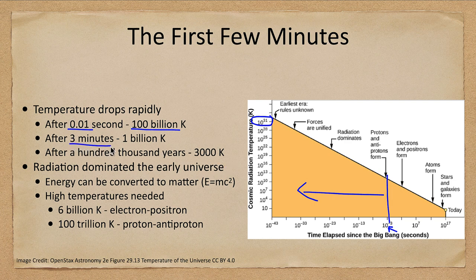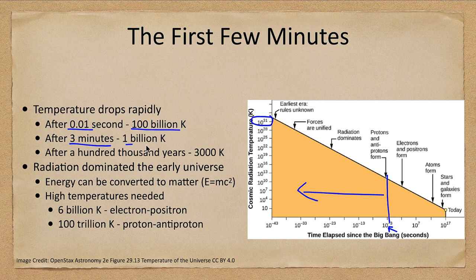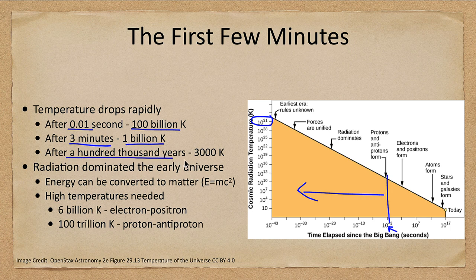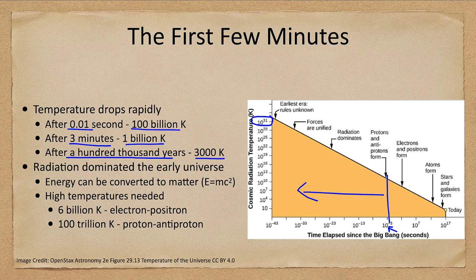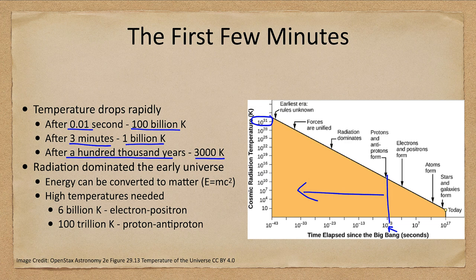After three minutes, we were down to 1 billion Kelvin, still much hotter than our Sun. And after nearly 100,000 years, it had gotten down to 3000 Kelvin, about half the temperature of our Sun and about the surface temperature of a very cool red dwarf star.